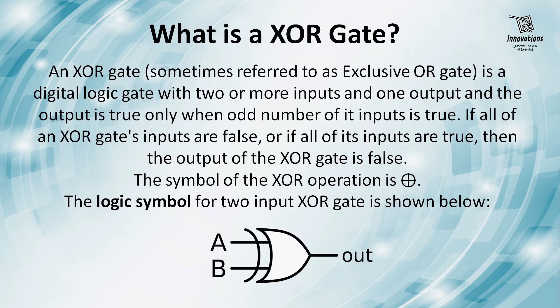An XOR gate or exclusive OR gate is a digital logic gate with two or more inputs and one output. The output is true only when an odd number of its inputs is true. If all of an XOR gate's inputs are false, or if all of its inputs are true, then the output of the XOR gate is false. The symbol of the XOR operation is a plus sign within a circle.